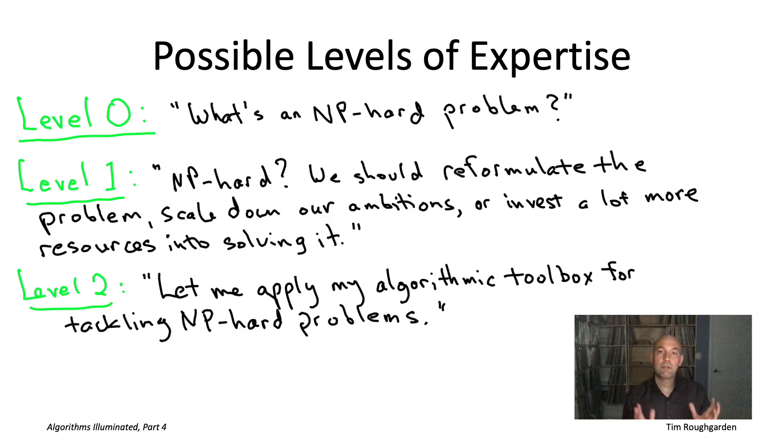To bring your level up to level two, you'll want to read chapters 20 and 21 of the book or watch the corresponding videos. Chapter 20 specializes in fast heuristic algorithms, where you give up on correctness but retain speed. Chapter 21 is the opposite compromise where you're always correct and hope to do at least somewhat better than naive exhaustive search.